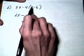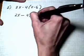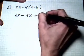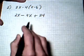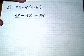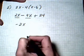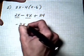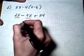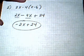Going to the next term: minus times minus gives plus. 4 times 6 is 24. Now combining like terms: 2x take away 4x — 2 take away 4 is minus 2x. Bring down the 24 with addition, and we've got minus 2x plus 24 for our final answer.